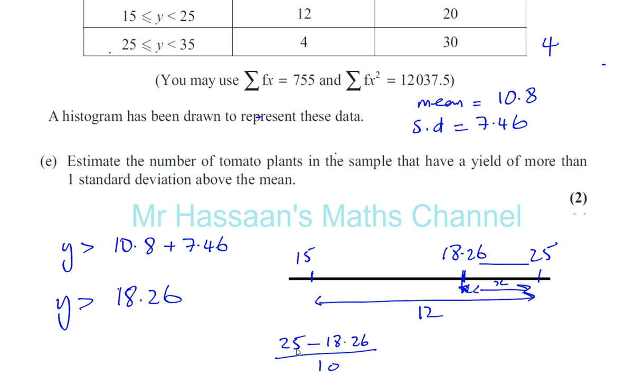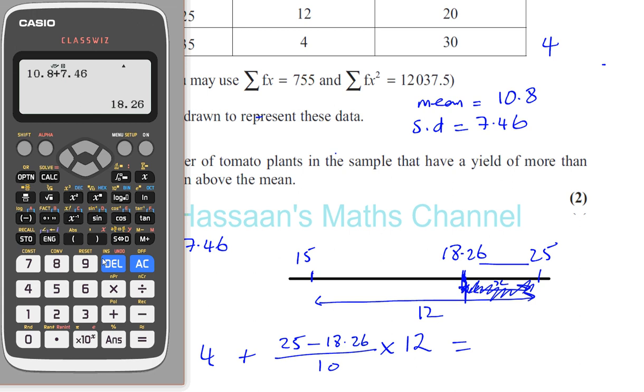You've got 25 minus 18.26 divided by 10 times 12. That will tell you the proportion in this section which we're going to add to the 4. So you're going to have 4 plus that. Let's calculate: 25 minus 18.26 is 6.74, divided by 10, multiplied by 12. That's how many are in this group which are more than 18.26.